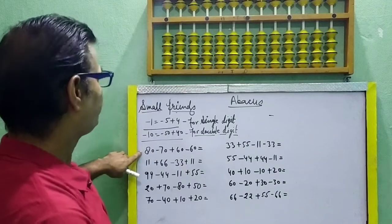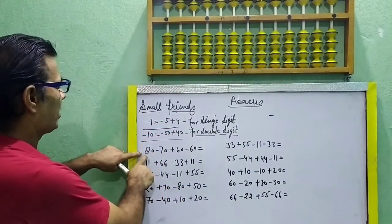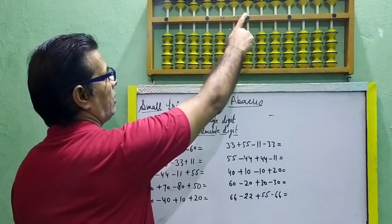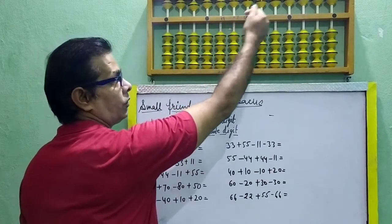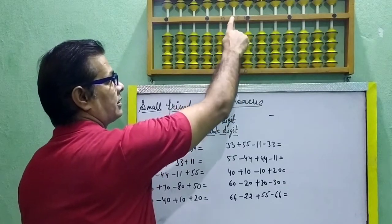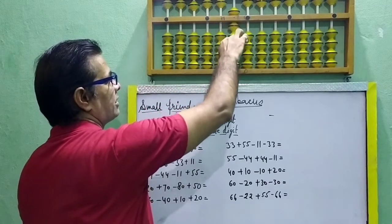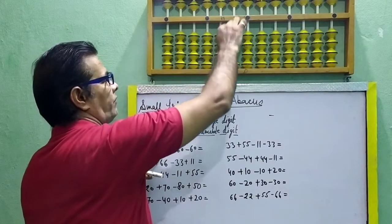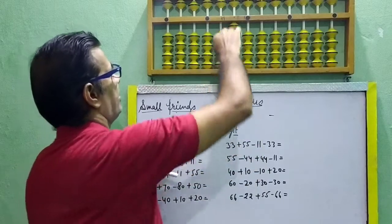Come to the point. First question: 80. Direct 80 — double digit, once tens. Double digit 80 means 50, 60, 70, 80. And then minus 70 — direct minus 70. Minus 50, 60, 70. Plus 60 — direct plus 60.